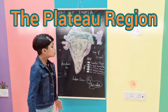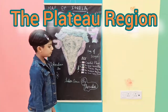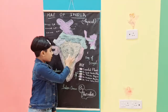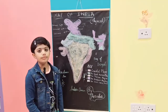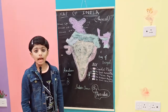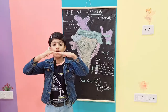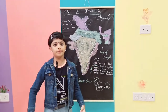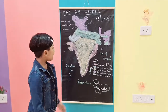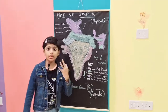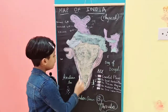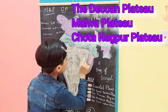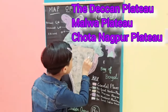Now let's go to the plateau region, which I have colored in brown. A plateau is a raised area of land with a flat top and sloping sides. There are three main plateaus in India: the Deccan Plateau, the Malwa Plateau, and the Chota Nagpur Plateau.